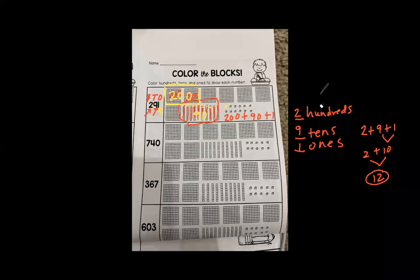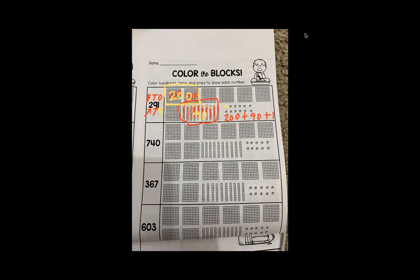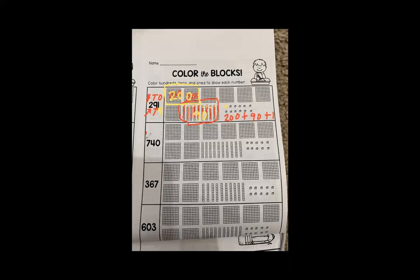The next number we have is 740. There are seven groups of 100, four groups of 10, and 0 ones. We're going to count up to 700 by 100: 100, 200, 300, 400, 500, 600, 700.